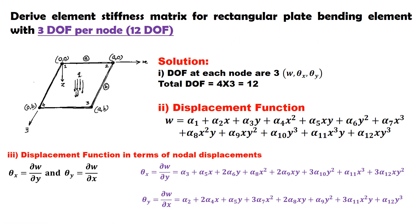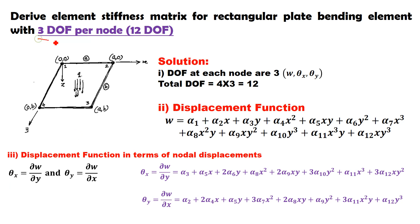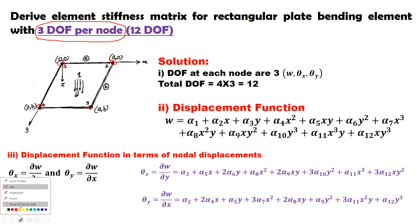The problem statement is to derive the element stiffness matrix for a rectangular plate bending element with 3 degrees of freedom per node. Since there are 3 degrees of freedom per node and the element has 4 nodes, the total degrees of freedom becomes 12 (4 × 3). This is the element considered for the mathematical formulation of the stiffness matrix.